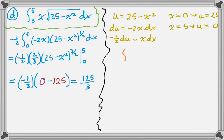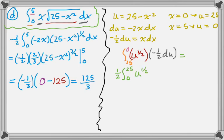And now I'm going to do all my substitutions. So I'm going to substitute for 25 minus x squared to get u to the 1/2. I'm going to substitute for x and dx with negative 1/2 du. And then I'm going to replace the 0 with 25. And a weird thing is happening here. And I'm going to replace the 5 with 0. So what happened was now the lower bound is bigger than the upper bound. So I'm going to have to flip that and change the sign.